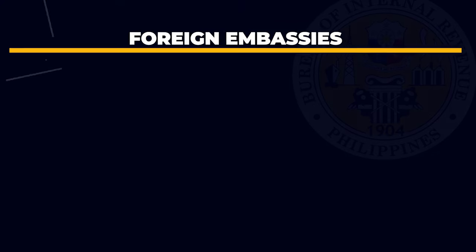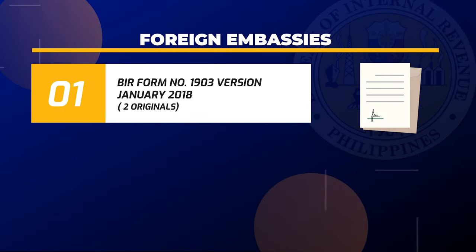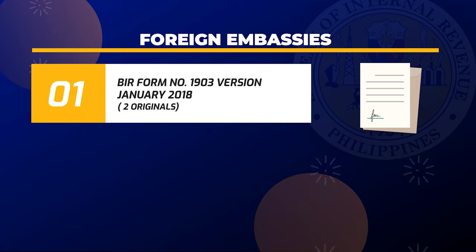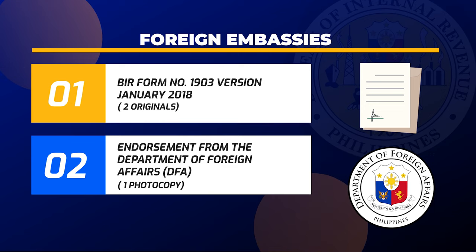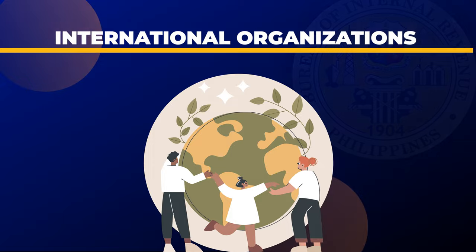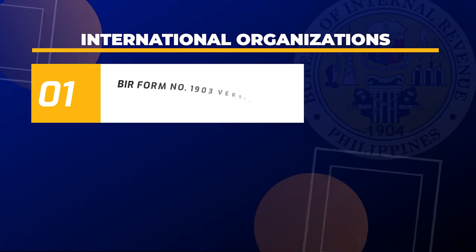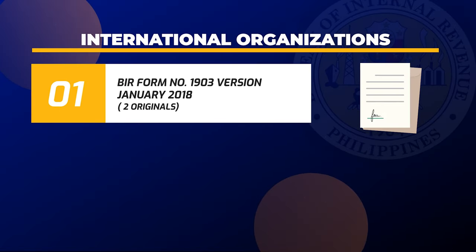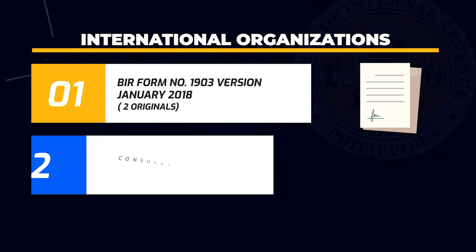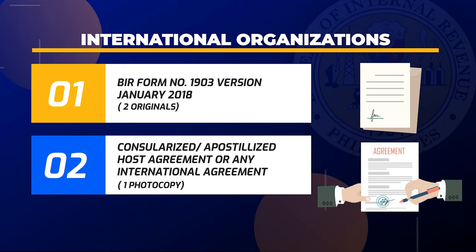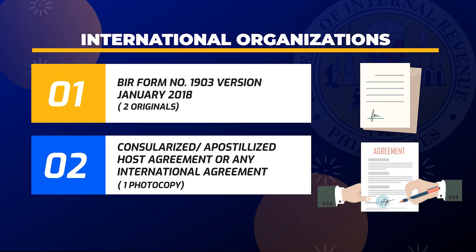For foreign embassies: BIR Form No. 1903, version January 2018, two original copies; and endorsement from the Department of Foreign Affairs (DFA), one photocopy. For international organizations: BIR Form No. 1903, version January 2018, two original copies; and consularized or apostolized host agreement or any international agreement, one photocopy.